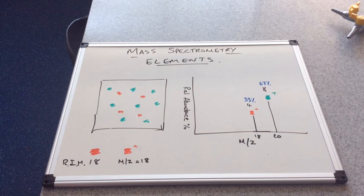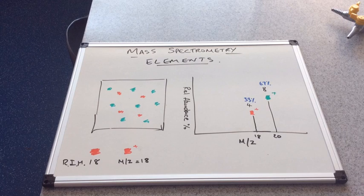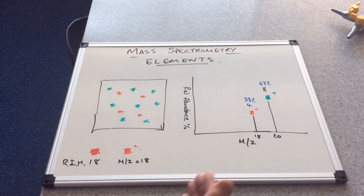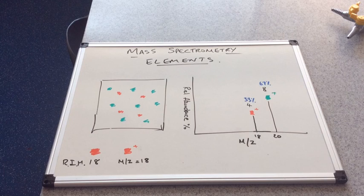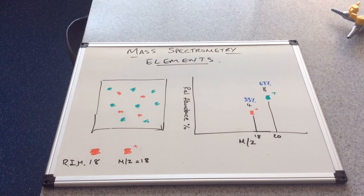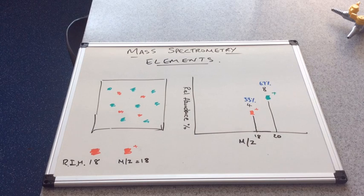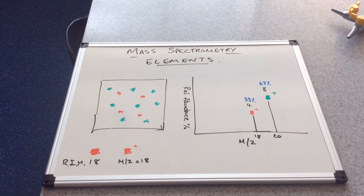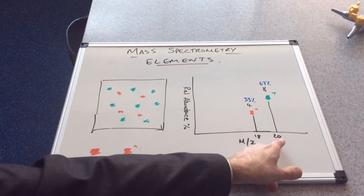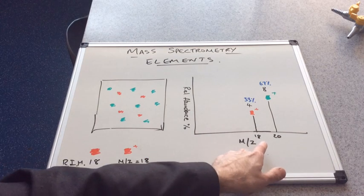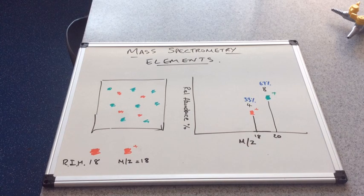What we're going to do now is use that information to work out the relative atomic mass of this sample. That information is the first bullet point I mentioned at the start. There were two things mass spectrometry can tell us about elements. What we've got now is the isotopic composition. This sample contains two thirds of isotope with a mass of 20 and one third the isotope with a mass of 18.